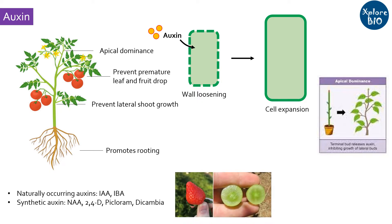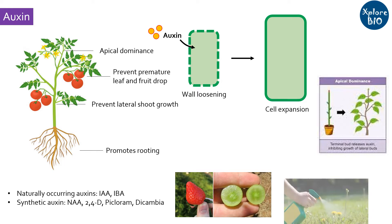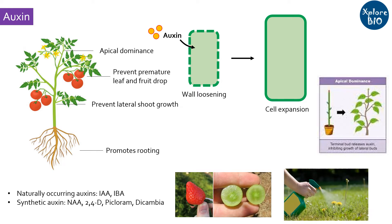For example, application of auxin results in seedless strawberry and grape production. 2,4-D, which is an auxin, is also used as a herbicide to kill dicot plants.